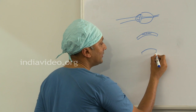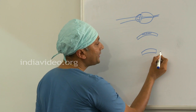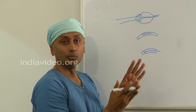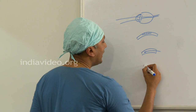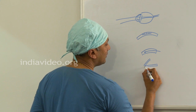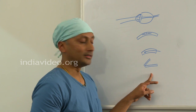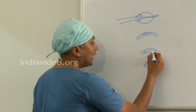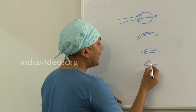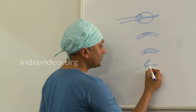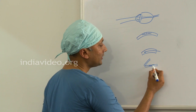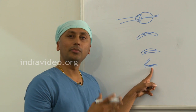In LASIK, a metal blade is used to cut the cornea into two parts and then a flap is lifted from the cut part. After the metal blade has been used to cut it into two parts and a flap is raised, a laser beam is used to remove or destroy a part of the cornea so that the power is taken away.